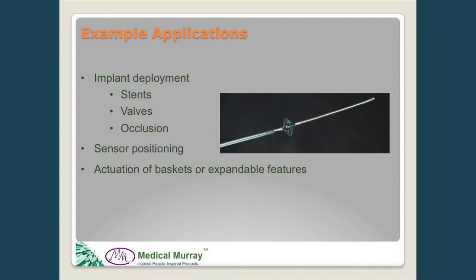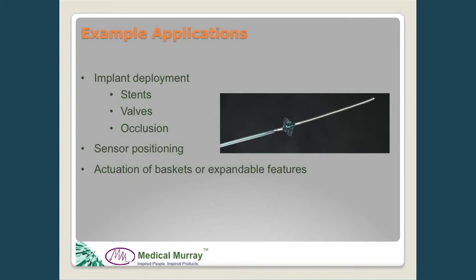Shown here are some examples of devices where axial positioning is critical. One of the most prevalent areas currently would be implant deployment such as stents and valves. These devices may include a member within the device that has to push the implant out of an outer sheath or covering. Another type of device would be for sensor positioning, where length is critical — we need to advance a sensor a precise length from the tip of a catheter to an area in the blood vessel or surrounding tissue.